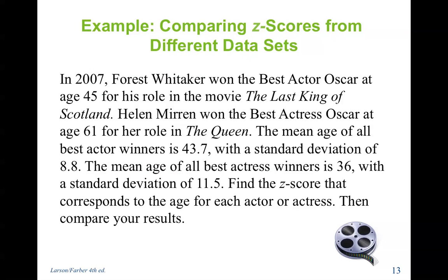So for this example, in 2007, Forest Whitaker won the Best Actor Oscar at age 45 for his role in the movie The Last King of Scotland. Helen Mirren won the Best Actress Oscar at age 61 for her role in The Queen. The mean age of all Best Actor winners is 43.7 with a standard deviation of 8.8. The mean age of all Best Actress winners is 36 with a standard deviation of 11.5. Find the z-scores that correspond to the age for each actor or actress, then compare your results.